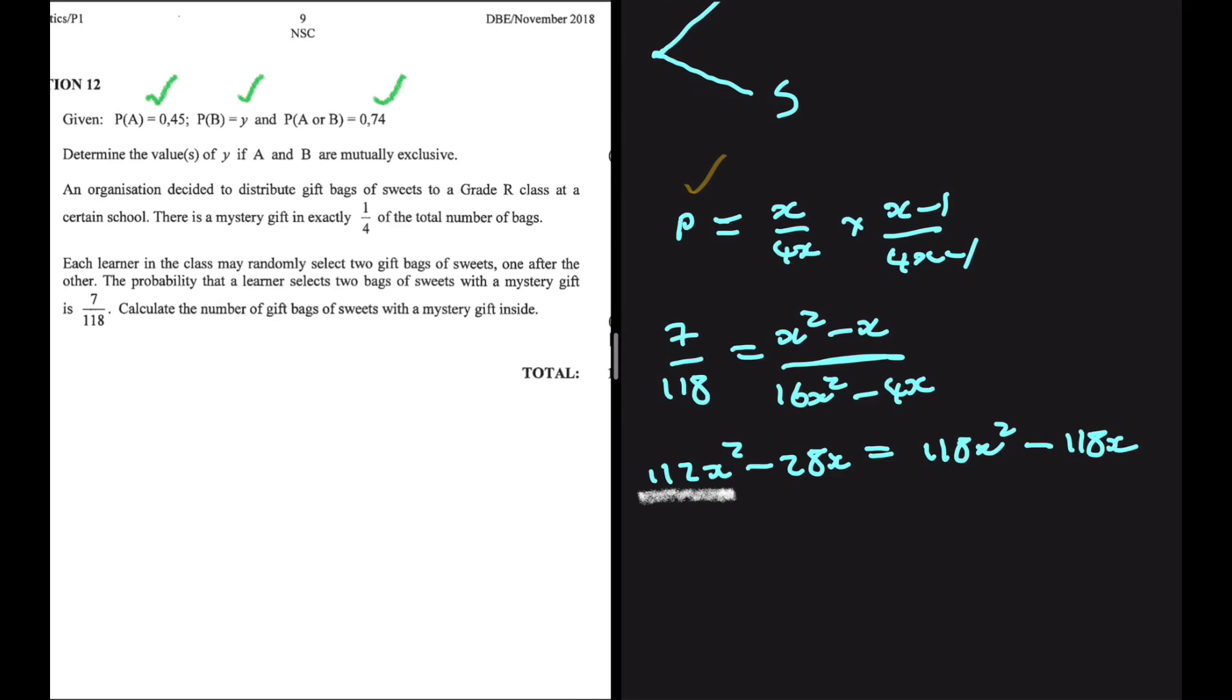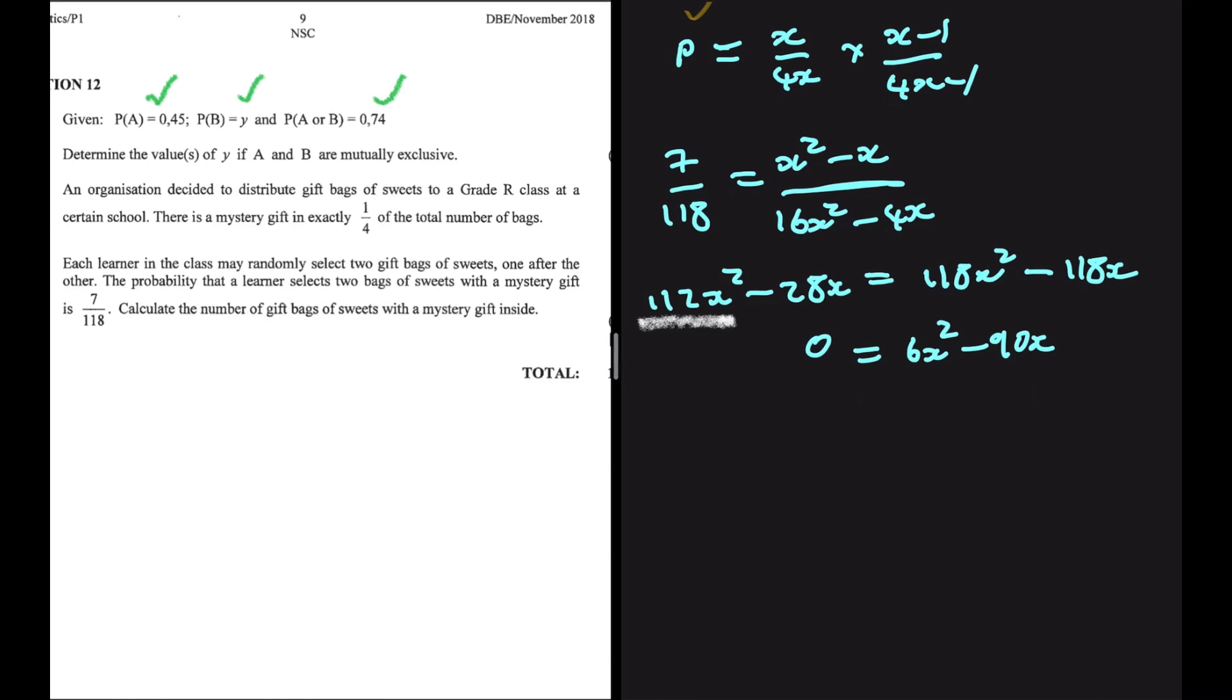If we take 182X squared to the right-hand side, we're going to get 188 minus 112, which is just 6X squared. If we take minus 28X to the right-hand side, we're going to get minus 90X. Now, let's just write this nicely. 6X squared minus 90X is equals to 0.